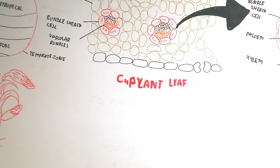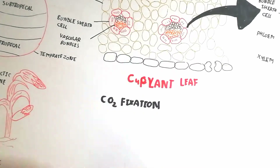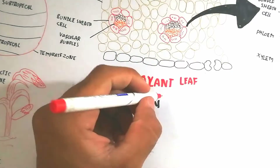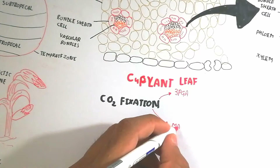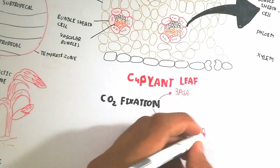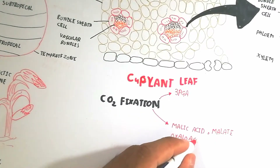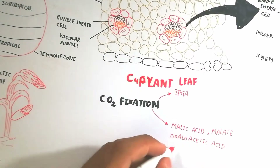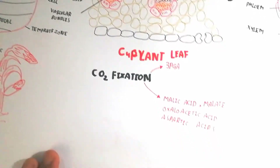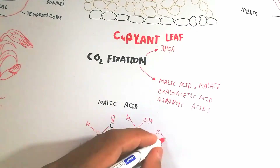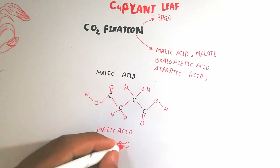Now we will discuss carbon dioxide fixation in C4 plants. In C3 plants, CO2 fixation produces 3-phosphoglyceric acid, a three-carbon compound. In C4 plants, CO2 fixation produces malic acid and malate — four-carbon compounds. That is why it is known as a C4 plant. The malic acid formula shows four carbons, which is why it is called a C4 plant.